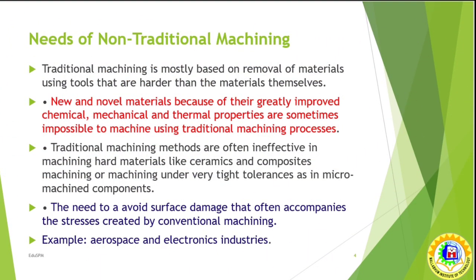Now the question comes to mind: what are the necessities of non-traditional machining? Traditional machining is mostly based on removal of materials using tools that are harder than the workpiece material. Another point is that new and novel materials, because of their rigidity, improved chemical, mechanical and thermal properties, are sometimes impossible to machine using traditional machining process.